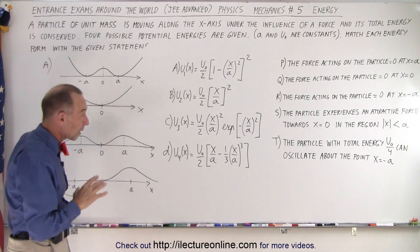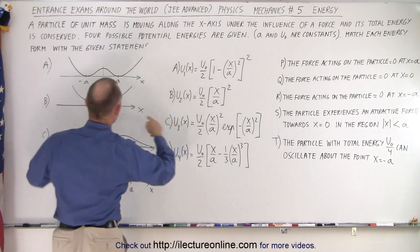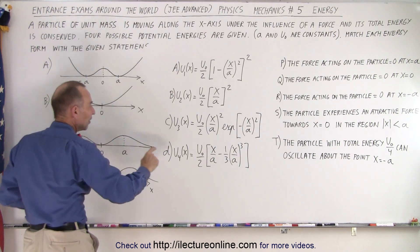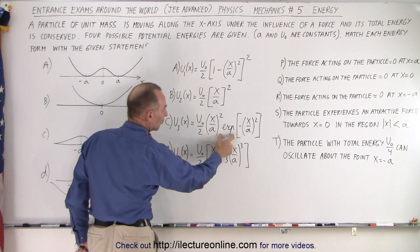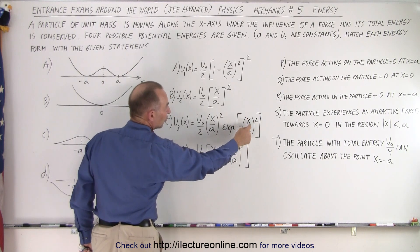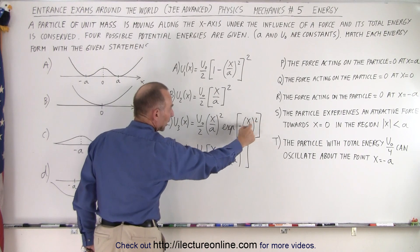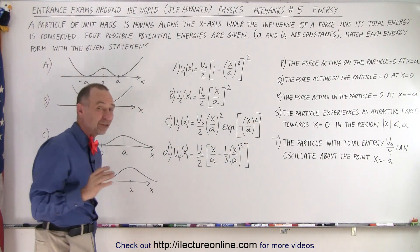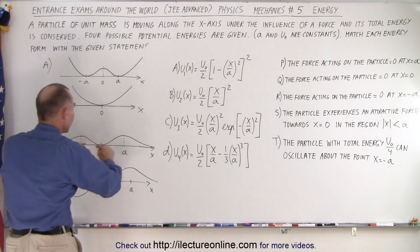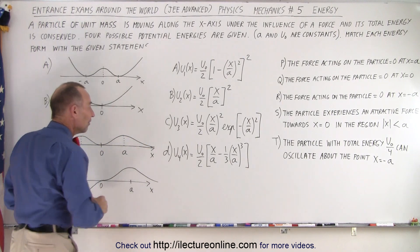The third equation is a bit more complicated. The first part is the same quadratic as before, so it initially starts similarly. But then we also have an exponential function, e to the minus x squared over a squared. As x becomes larger than a, this exponent becomes greater than 1, and since it's a negative exponent, it decreases the value on both sides. So the function goes up, then by the time you reach a, it starts diminishing.